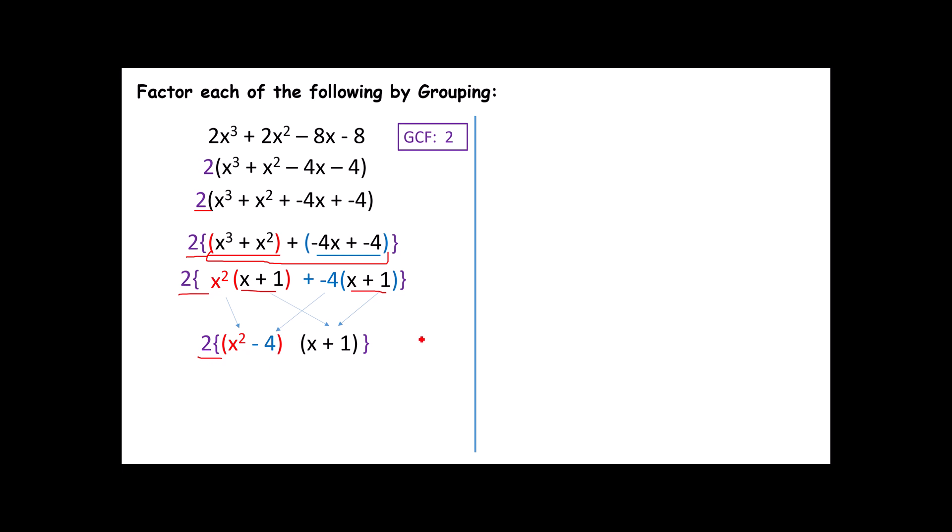Just like before, the x² and the -4 both come down to make the first binomial, and the (x + 1) is going to be the second binomial. Again, making sure I drag the 2 along for the ride. Now, if you've been paying very close attention, you might notice that there's something else going on here. The (x² - 4) is a difference of squares pattern. This is factored, but it is not factored completely, because we know from the difference of squares pattern that if I have a perfect square minus a perfect square, that's actually going to break down into (x - 2)(x + 2). This is actually your final answer.